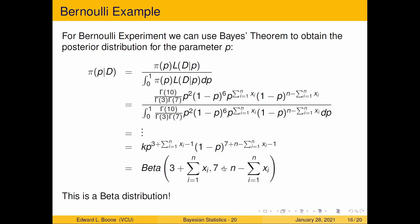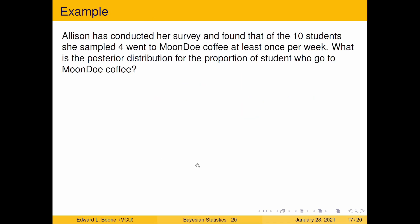It happens to be a beta distribution again. We started off with a beta, ended up with a beta. That'll be something we'll be talking about more later, but we actually have the formula for it. All I have to do is, once I collect my data, plug in the sum of the x's, and then n minus the sum of the x's, and I'll know the beta distribution for it.